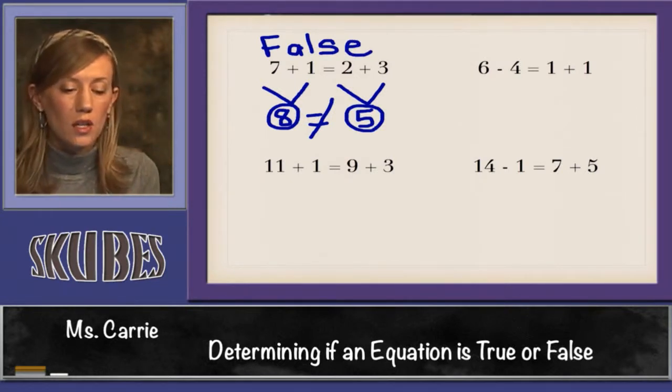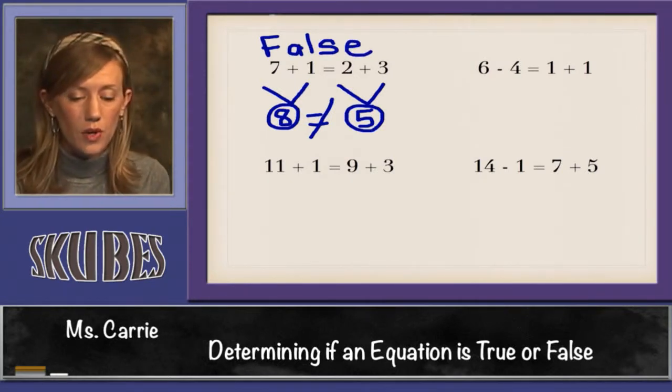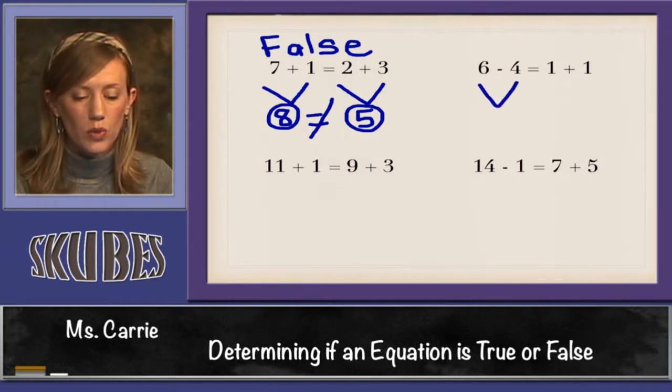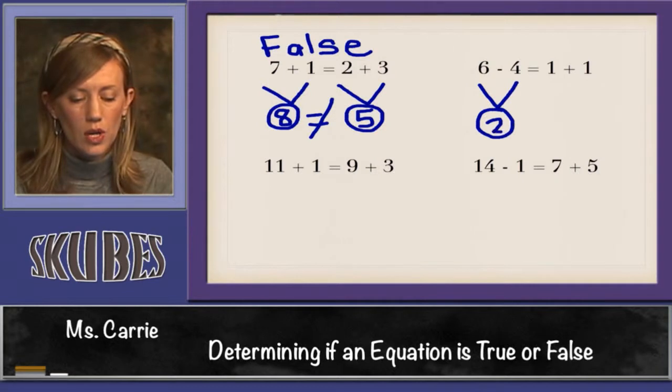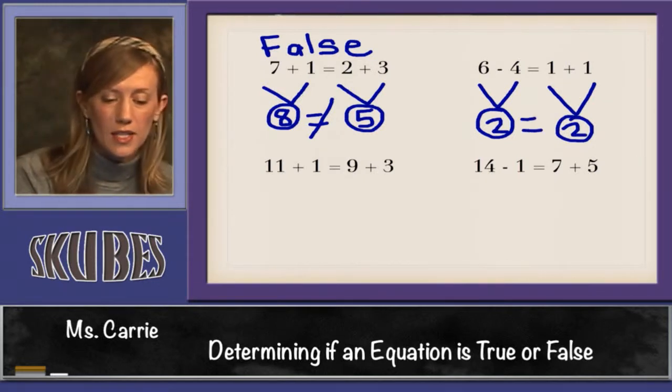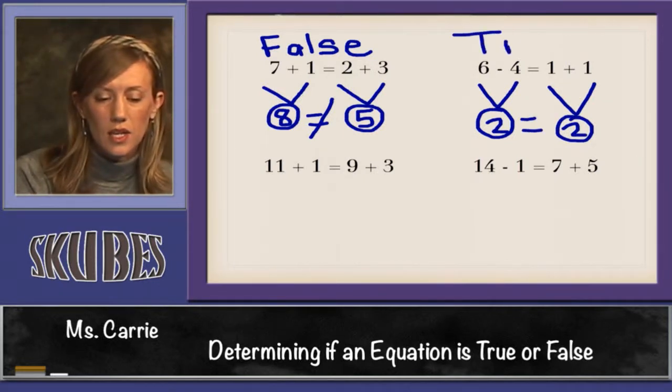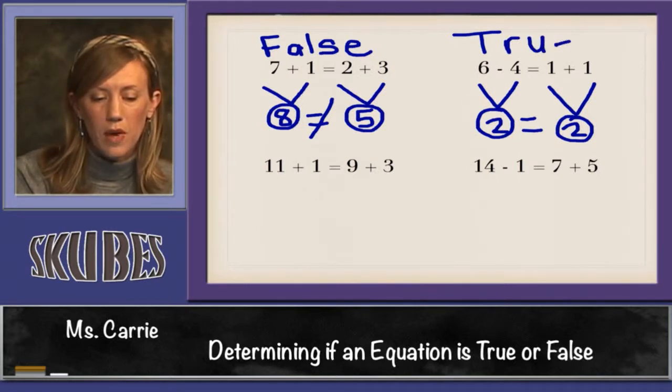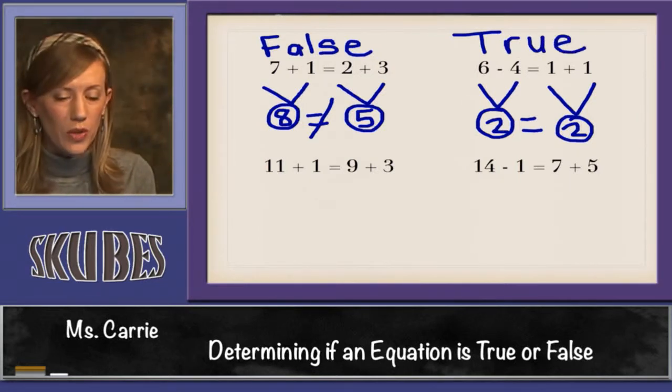Let's look at this next one. This one has subtraction in it. First we have to find out what 6 minus 4 is. That would be 2. Then we need to find out what 1 plus 1 is. That would be 2. Is 2 equal to 2? Yes it is. So this is true. 6 minus 4 is equal to 1 plus 1.